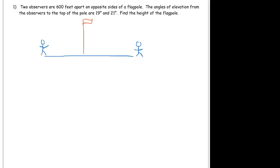The angles of elevation from the observers to the top of the pole are 19 degrees and 21 degrees. So recall, the angle of elevation would be this angle here, and also this angle here. And we're told that those are 19 degrees and 21 degrees. And these guys are 600 feet apart, so this is 600 feet.